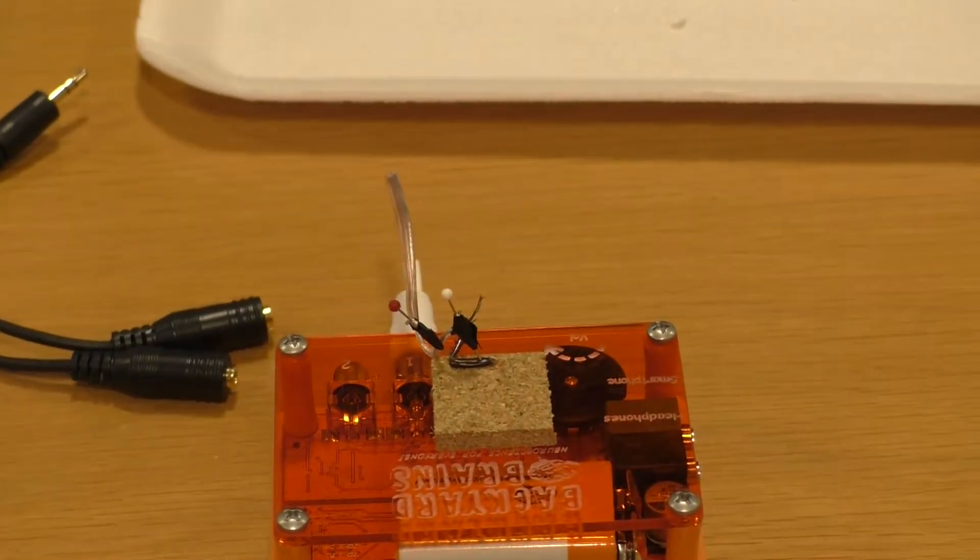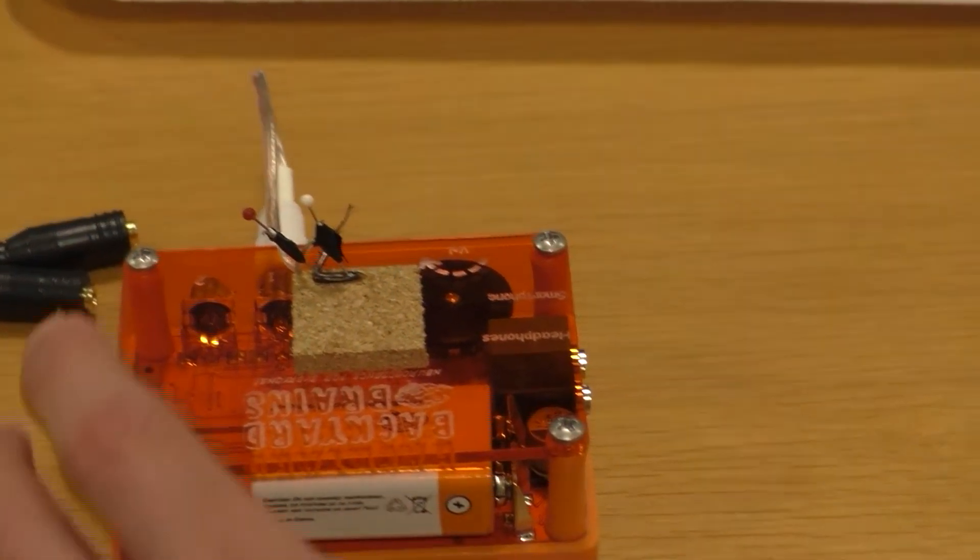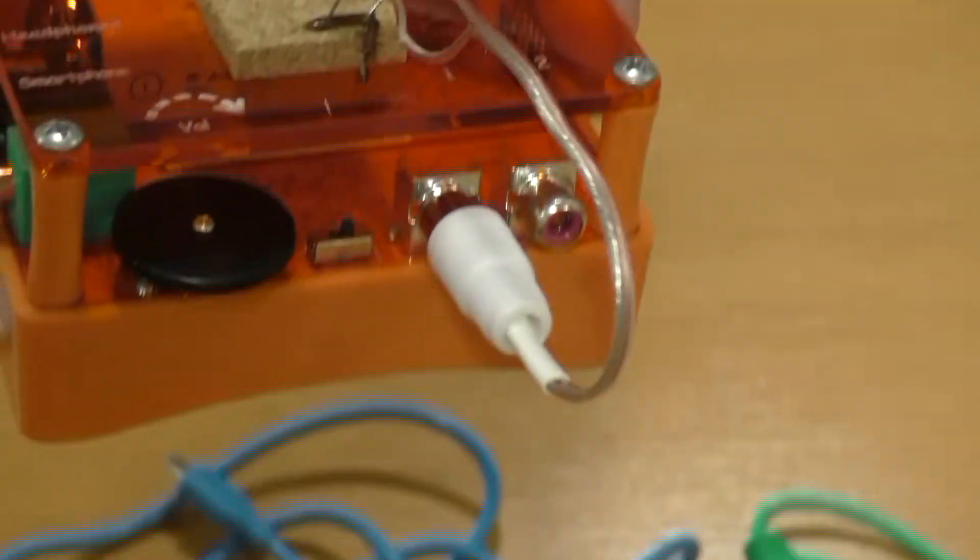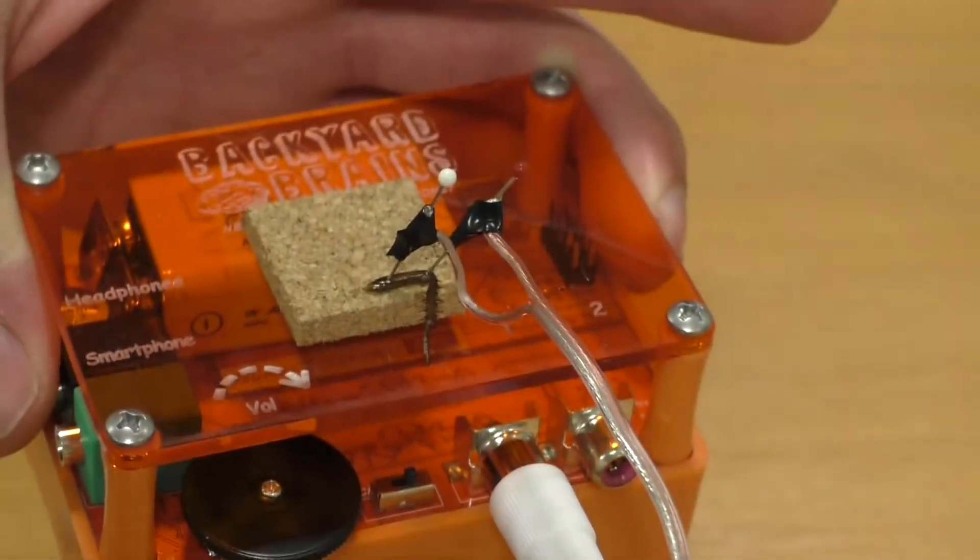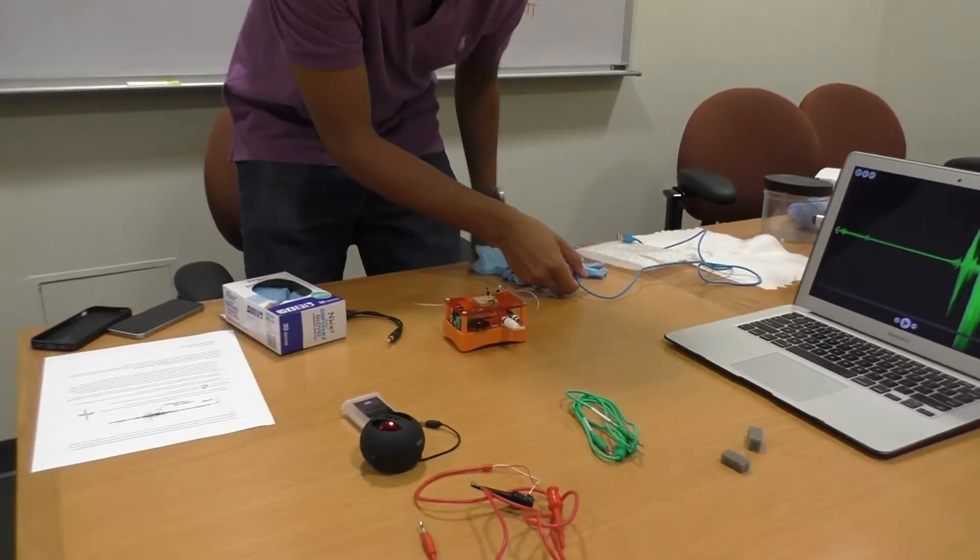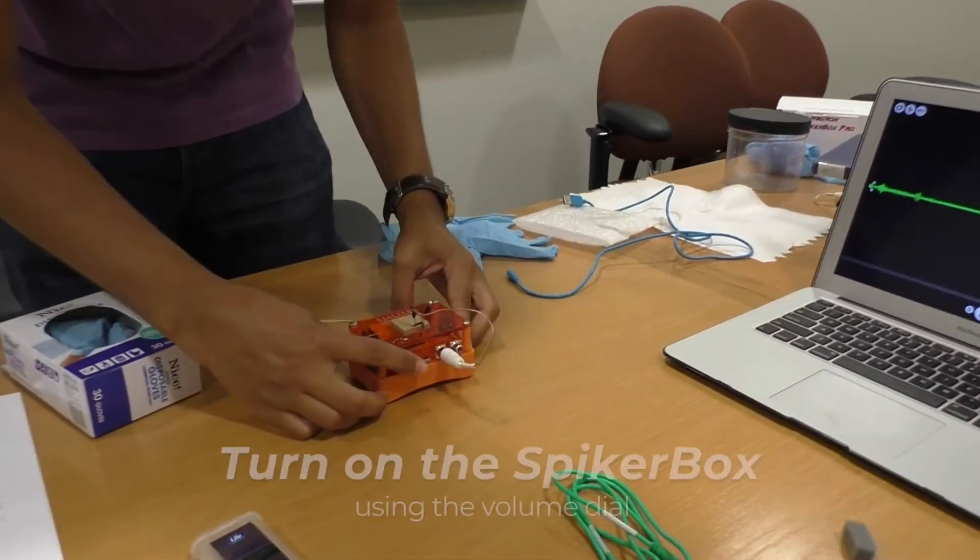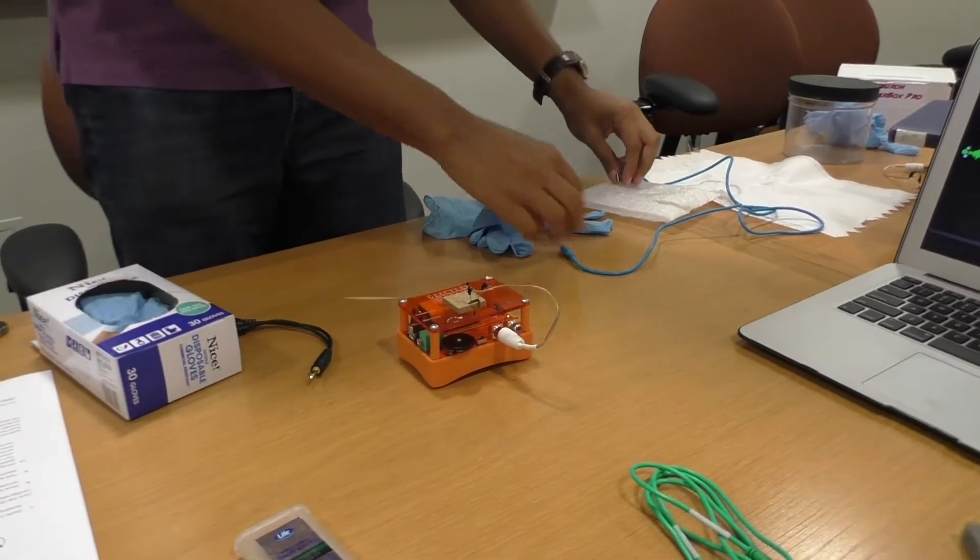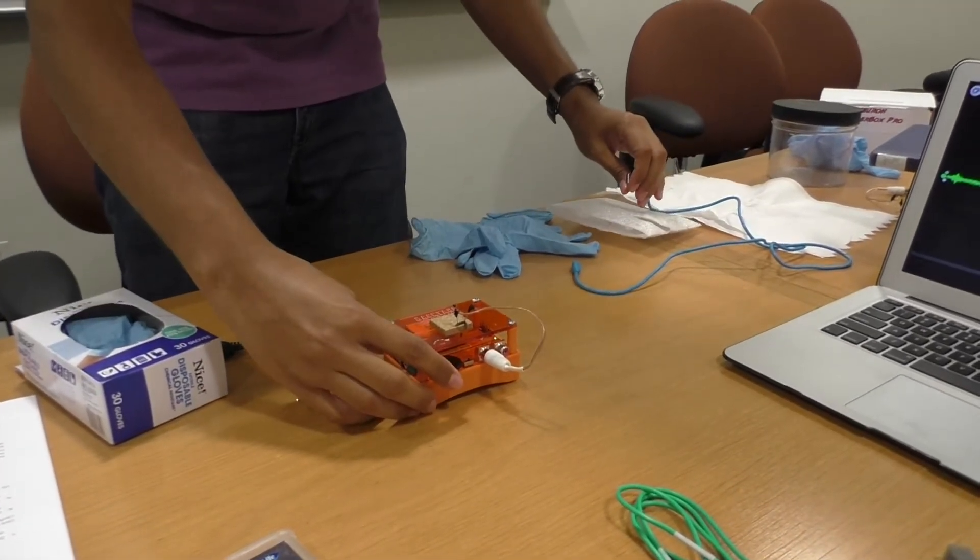Now that you're done setting up the leg itself, you can take off your gloves to do the additional parts of the experiment. So once the electrodes are attached to the leg of the cockroach, you're going to want to turn on the SpykerBox. You'll hear that sound. You can turn it up all the way.